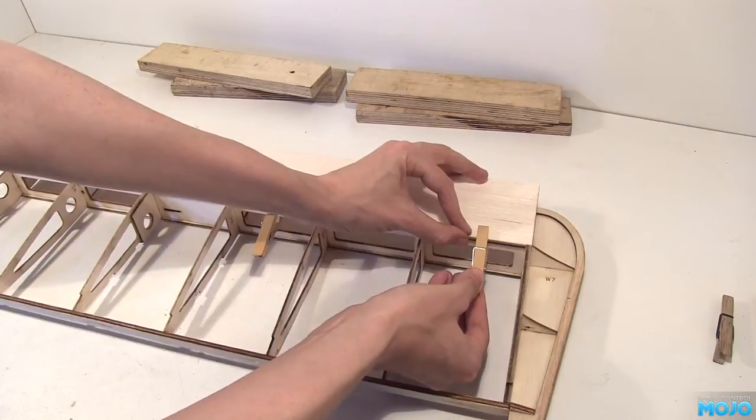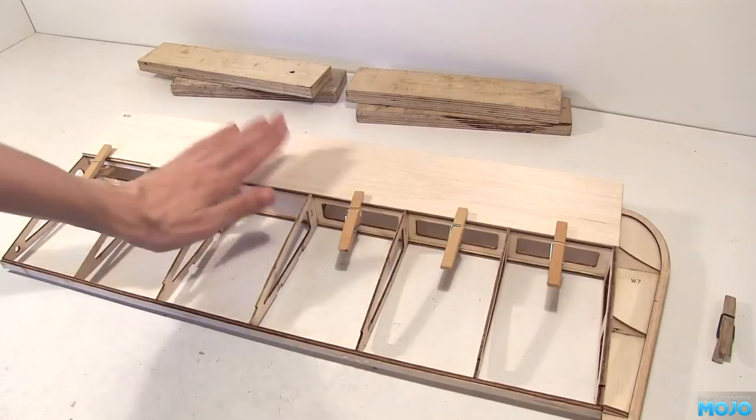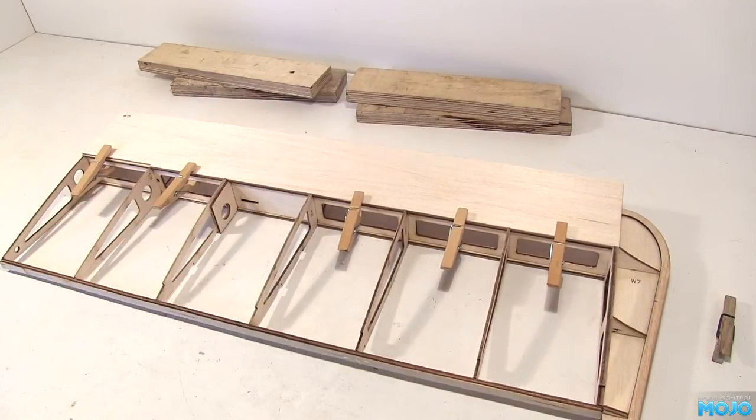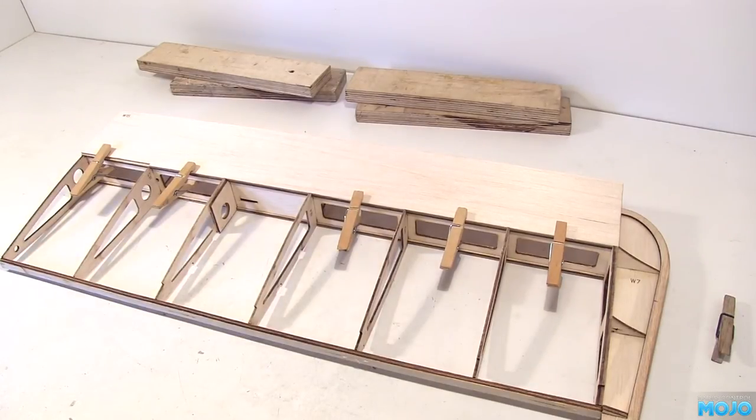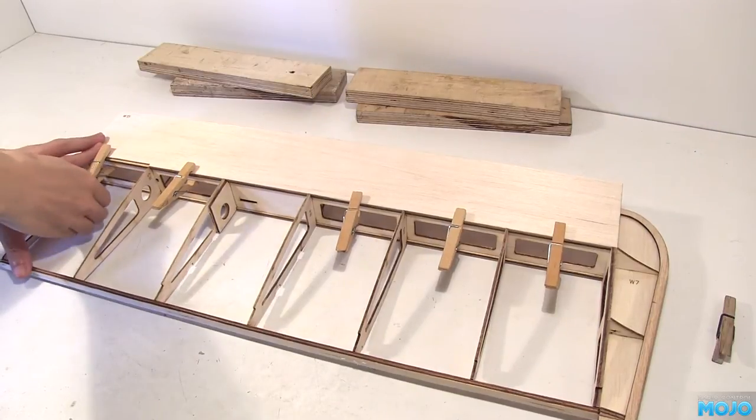Now, because we're using thick CA, it will take a few minutes to fully go off. We're going to be stressing the glue joint, so we don't want it to crack if the glue hasn't set fully. To be safe, I normally leave it for at least 30 minutes, but an hour wouldn't hurt.